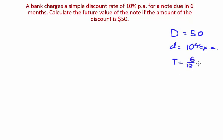So six on twelve years, because you want these two, your rate and your time, to be in the same time units. Let's draw out our diagram: discount, future value, your discount rate and your time.